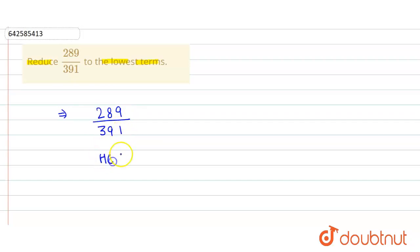So the HCF of 289 and 391. For that, we first find out the prime factors of both of these numbers.